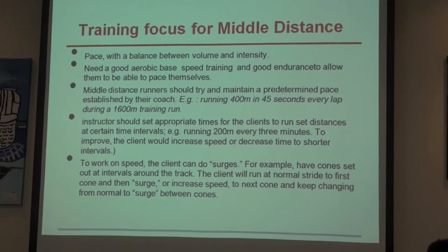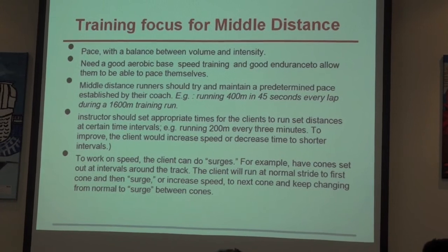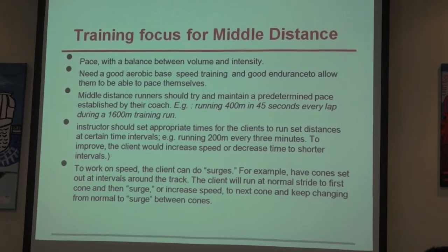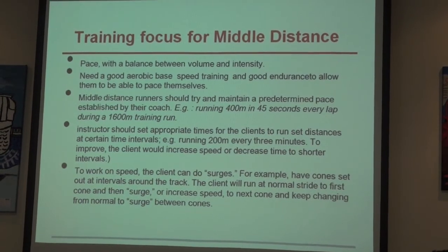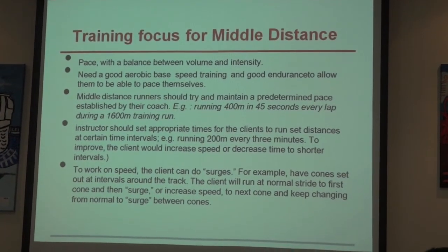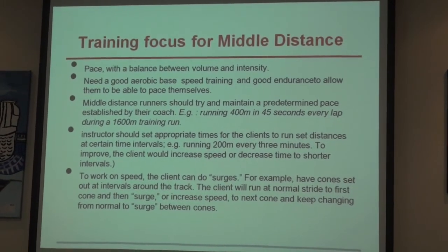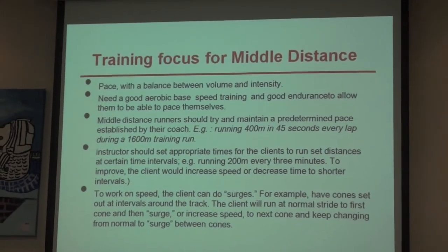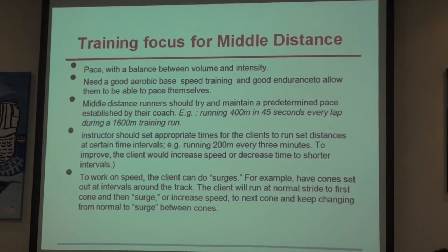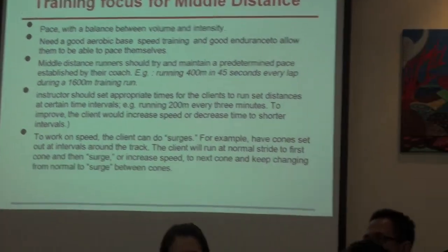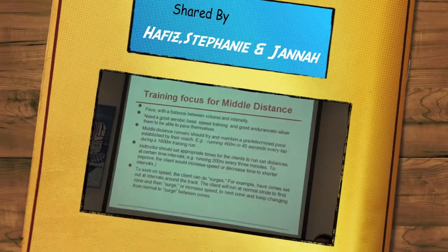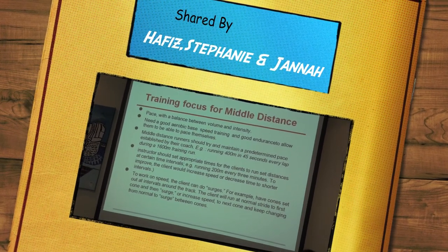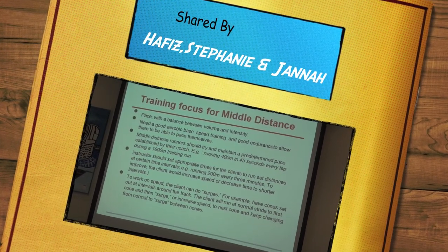To work on speed, clients can do surgers. For example, have cones set out at intervals around the track. The client will run at a normal stride to the first cone and then surge to increase speed, mixing cones and changing from normal to surging. For whistle-based speed training, do 1 minute of slow jog and then 30 seconds of fast jog.